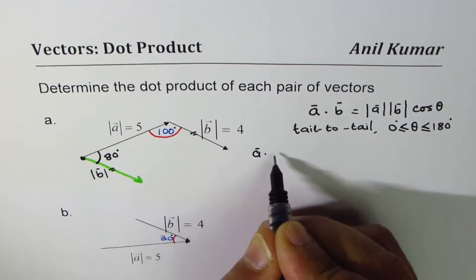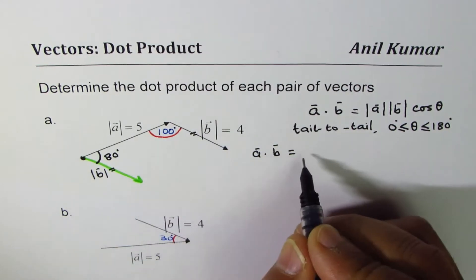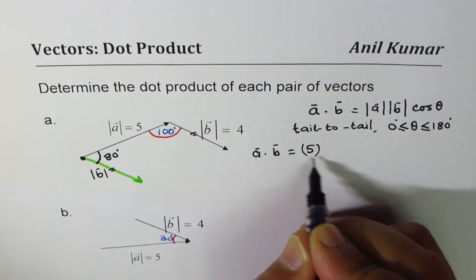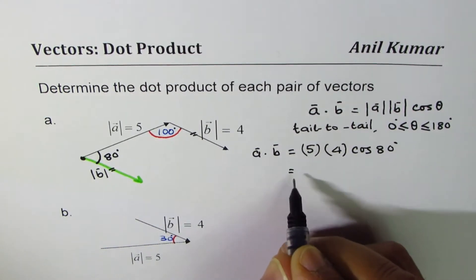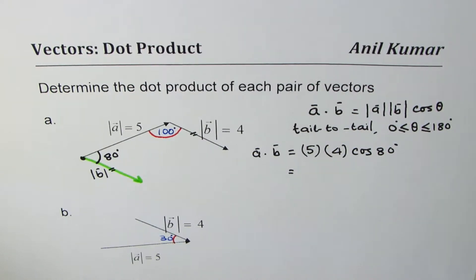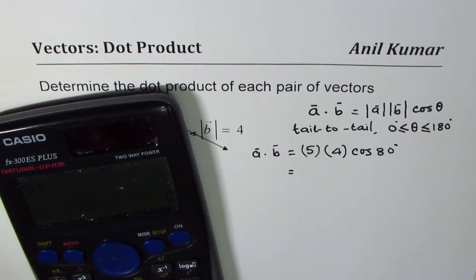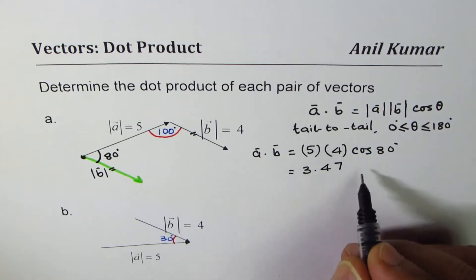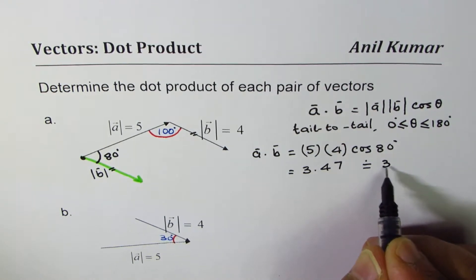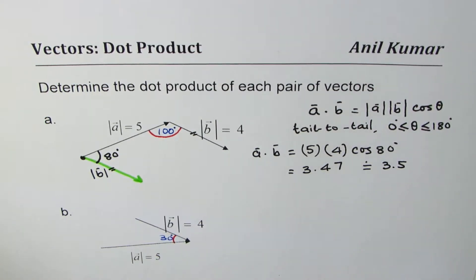So we can write: dot product of vector A and B equals magnitude of A, which is 5, times magnitude of B, which is 4, times cosine of 80 degrees — not 100 degrees, and that's the whole point of this question. Calculating 5 times 4 times cosine of 80 degrees — make sure your calculator is in degrees, not radians — gives approximately 3.47, which rounds to 3.5.